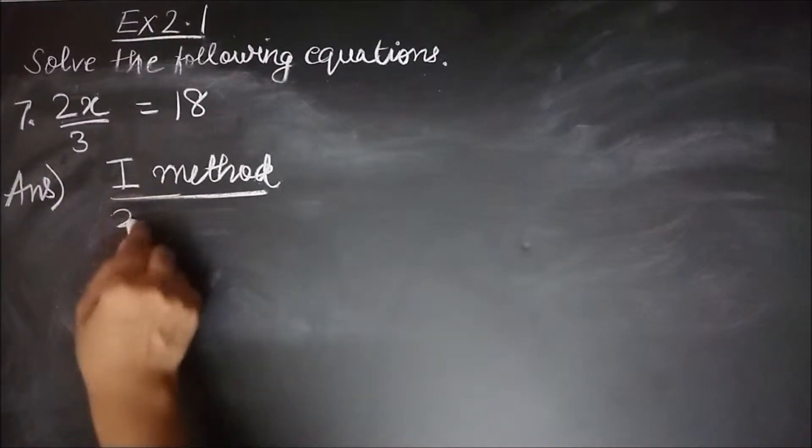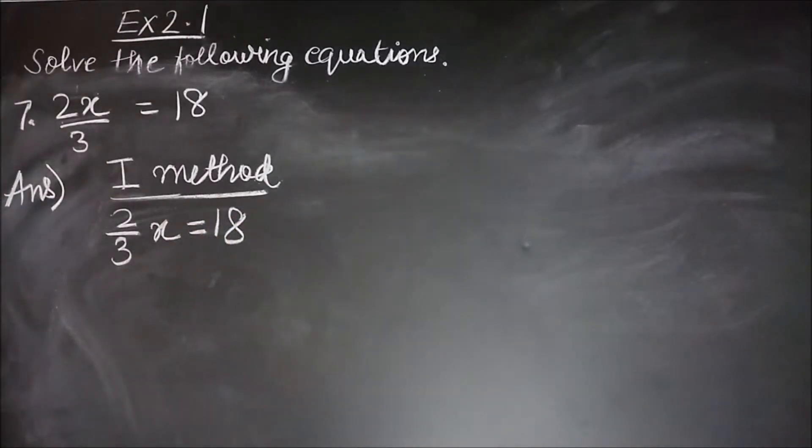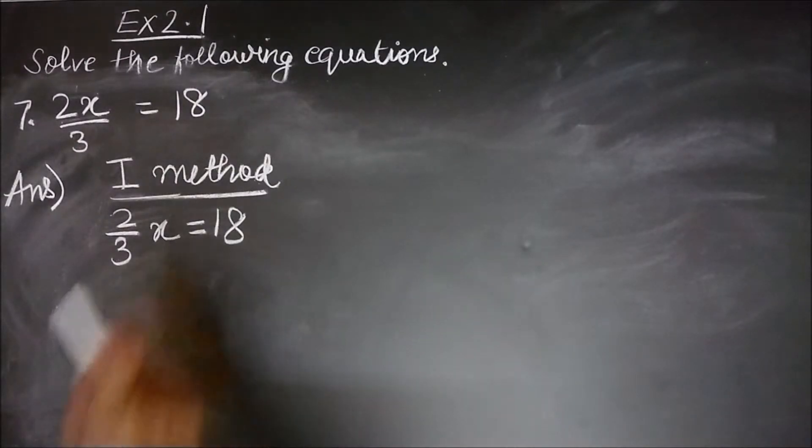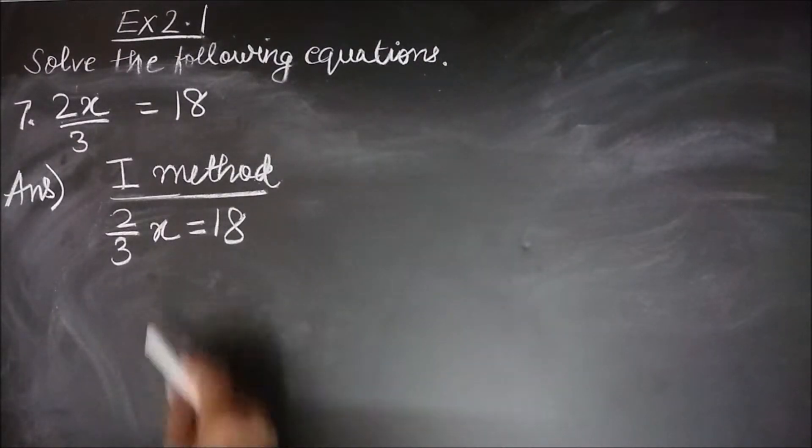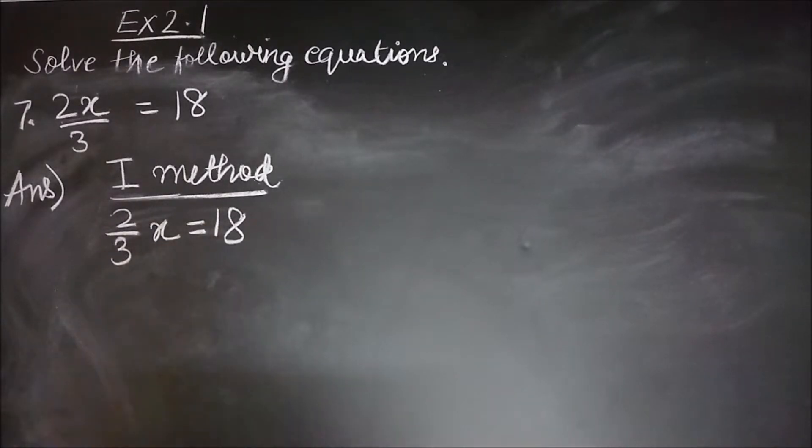Let us see the first method of solving this. What all constants do we have here? We have 2, 3, and 18, and the variable is x. My variable is already on the left hand side, so let me keep it here and move my constants to the right hand side. I need to remove 2 and 3 from the left hand side. Let us start with 3.